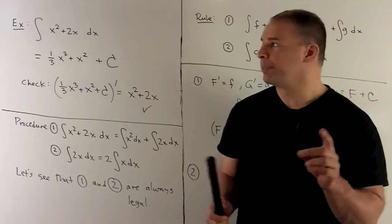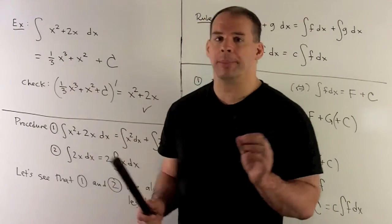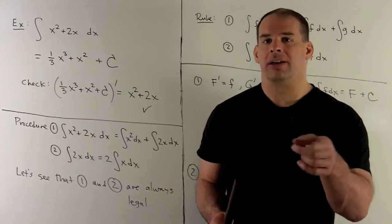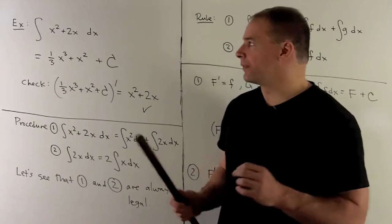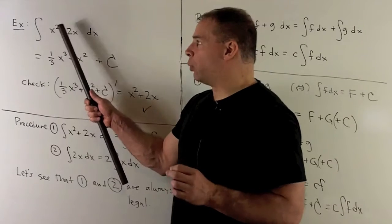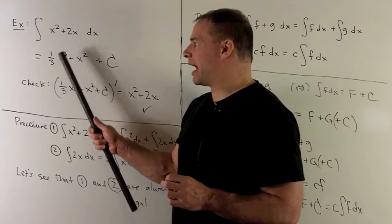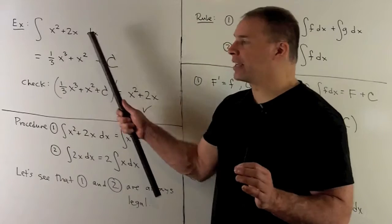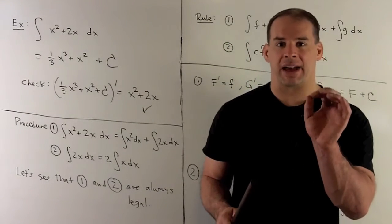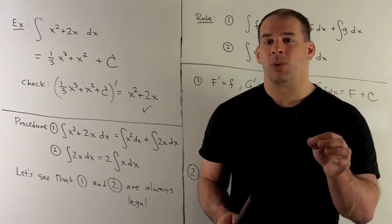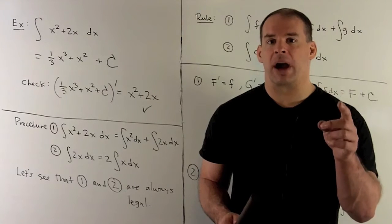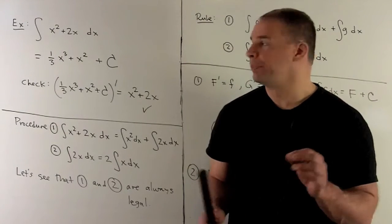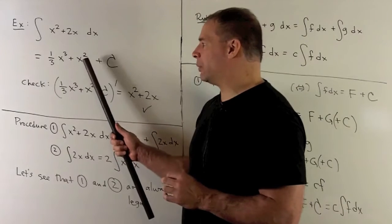The procedure we use: if I have x to a power, we take the power, add 1, and flip it over. So for x squared, we add 1 to get x cubed, then divide by 3. For the 2x — x is x to the 1 — we add 1 to get x squared, flip it over to get x squared over 2. Then the 2s cancel, leaving x squared.